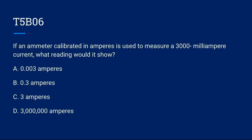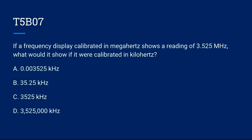T5B06, if an ammeter calibrated in amperes is used to measure a 3,000 milliampere current, what reading would it show? A. 0.003 amperes. B. 0.3 amperes. C. 3 amperes. Or D. 3,000,000 amperes. The correct answer is C. 3 amperes. T5B07, if a frequency display calibrated in megahertz shows a reading of 3.525 megahertz, what would it show if it were calibrated in kilohertz? A. 0.003525 kilohertz. B. 35.25 kilohertz. C. 3525 kilohertz. Or D. 3,525,000 kilohertz. The correct answer is C. 3,525 kilohertz.